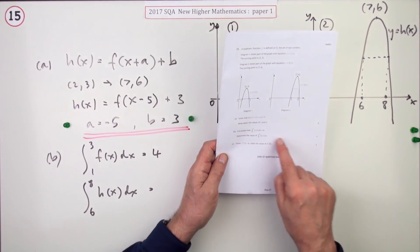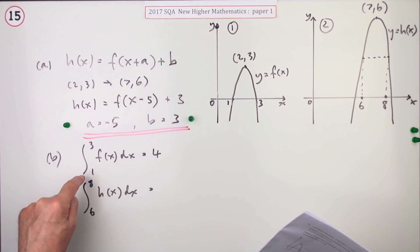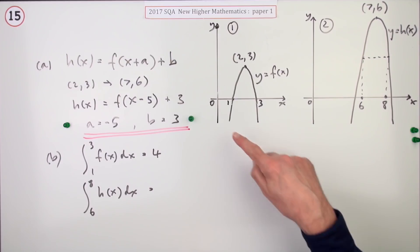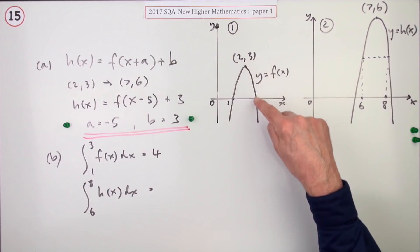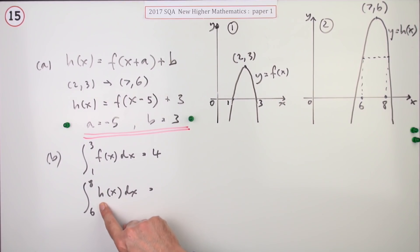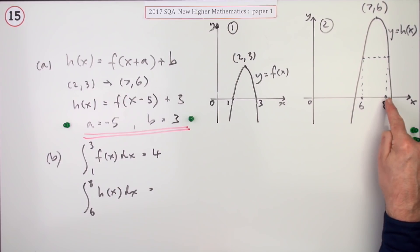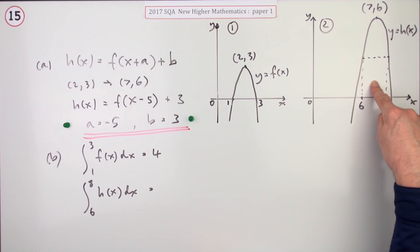Now part b makes it look very complicated for just one mark. It says it's known that the integral of f of x from 1 to 3 is 4. Well, what that means interpreted as an area is this area in here. This area between f of x and the x-axis between 1 and 3 is 4 units. And all that this means is area between 6 and 8, remember that doesn't include these parts, that's between these two lines. What's that equal to? Just for one mark.